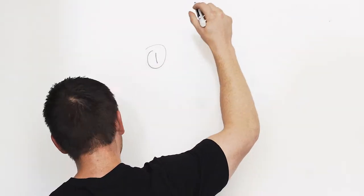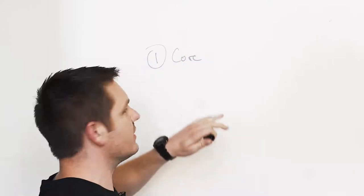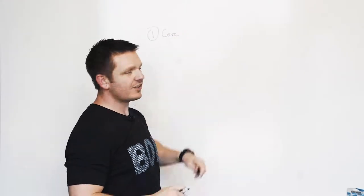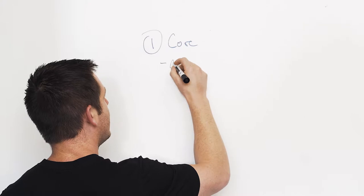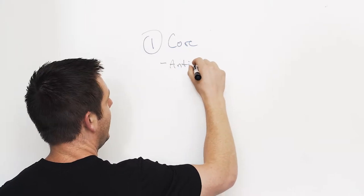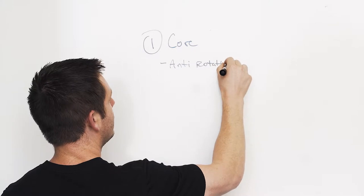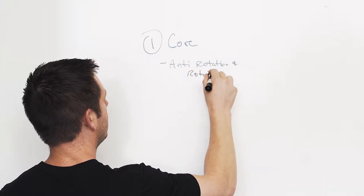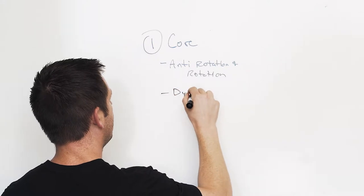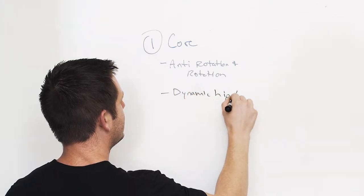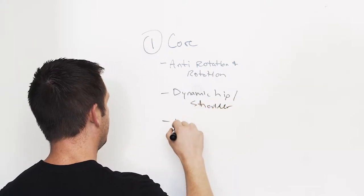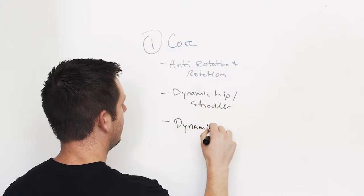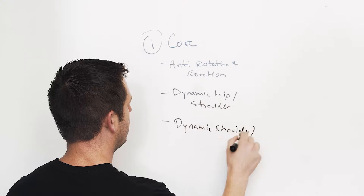So our four pillars, the first pillar, pillar number one, is our core exercises. Within that pillar, there are four different buckets that all of our core exercises fall into. There's anti-rotation and rotation, dynamic hip and static shoulder, dynamic shoulder and static hip, and then there's isometric and dynamic.